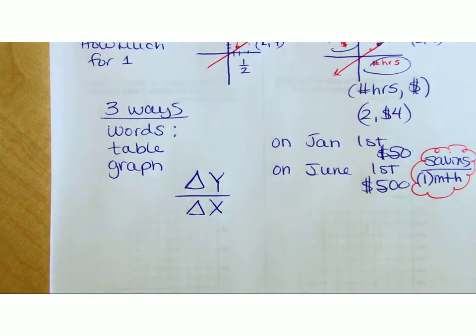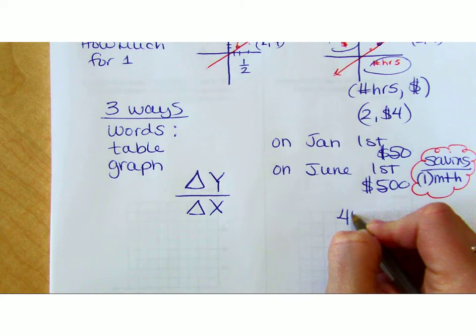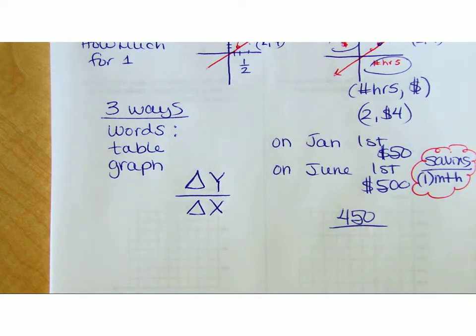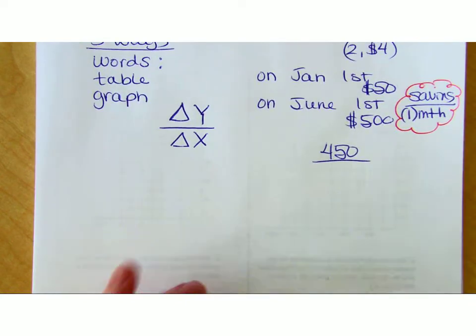So now, all I have to do is say, you could do this technically in your head if you want. You could say, I had 50, now I have 500. So I saved 450.